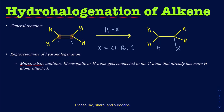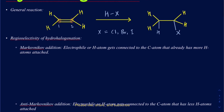But now suppose you run into a condition where your alkene is not symmetrical. Then you've got to really worry about which carbon is going to get the hydrogen and which carbon is going to get the halogen. Let's take an example of 1-butene.